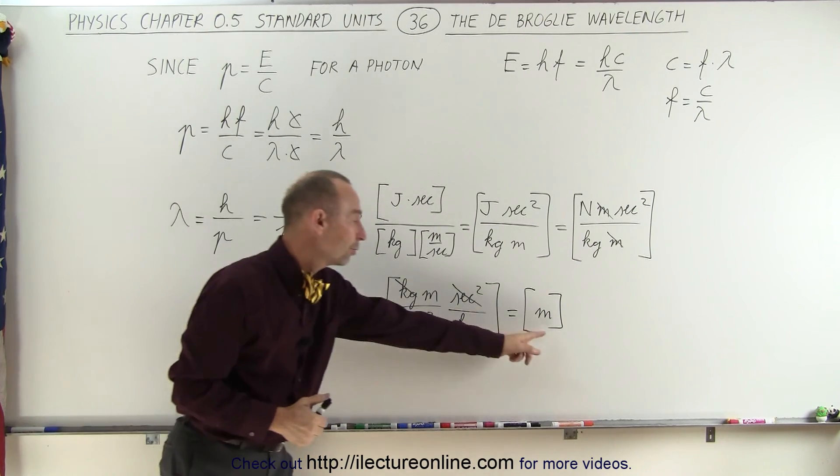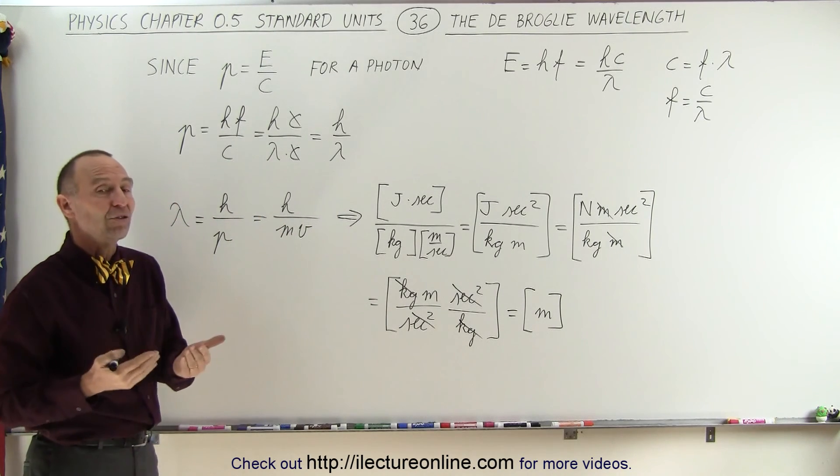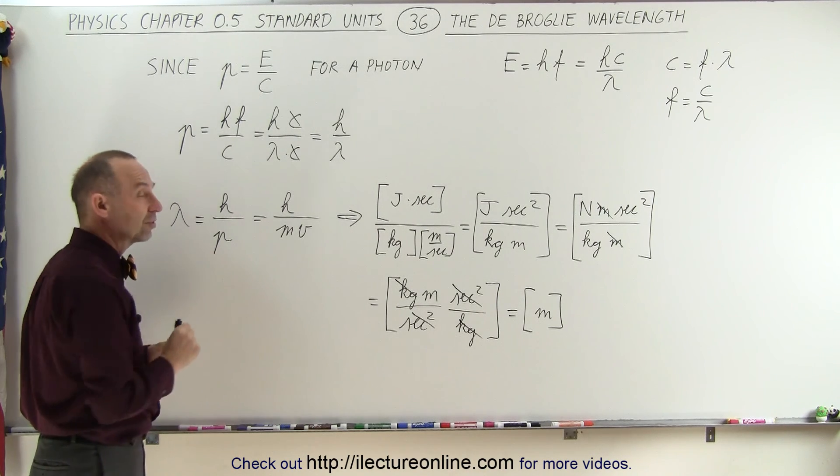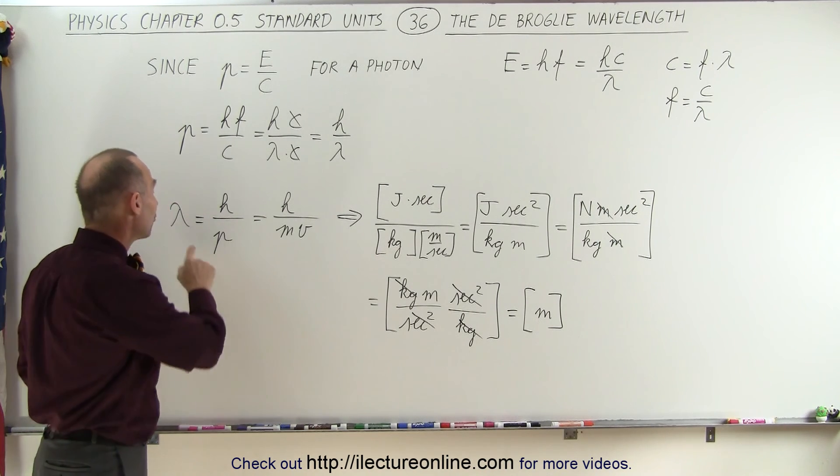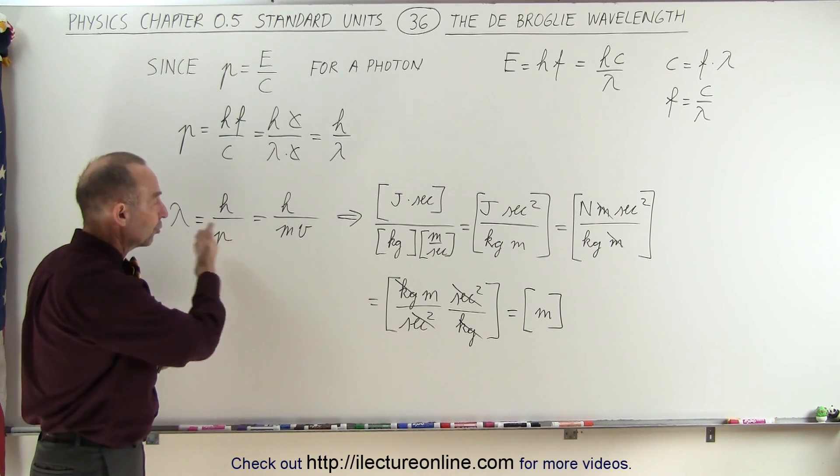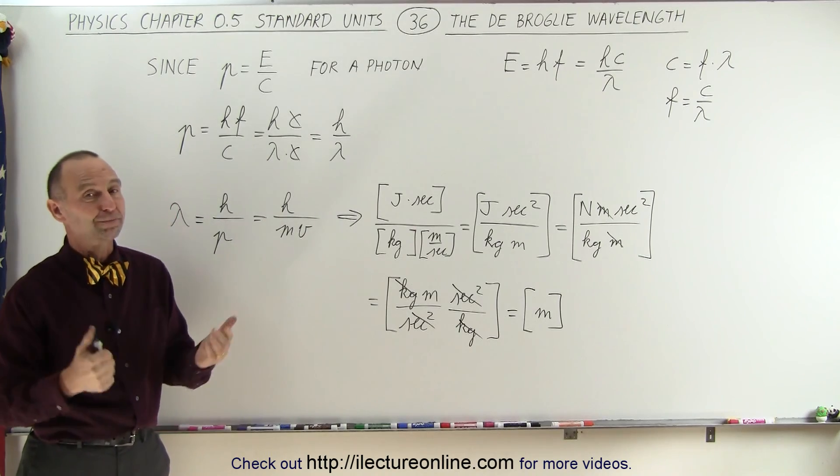It does give us the units for wavelength, and it turns out that through experimentation we discovered that this indeed doesn't explain that small particles like electrons do have wavelengths and act like waves, and therefore we have to have an associated equation that describes the wavelength of small particles. And that's it.